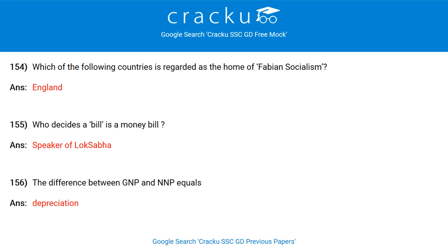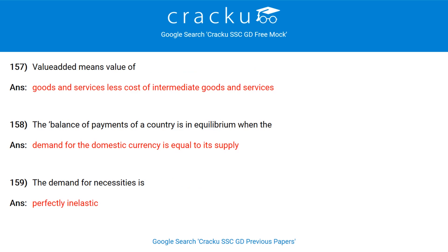Which of the following countries is regarded as the home of Fabian socialism? England. Who decides if a bill is a money bill? The Speaker of the Lok Sabha. The difference between gross national product and net national product equals depreciation. Value added means value of goods and services less the cost of intermediate goods and services. The balance of payments of a country is in equilibrium when the demand for the domestic currency is equal to its supply. The demand for necessities is perfectly inelastic.